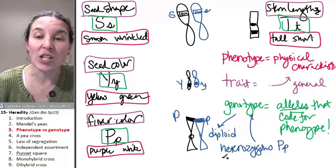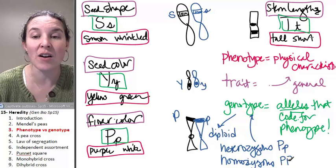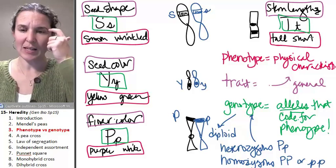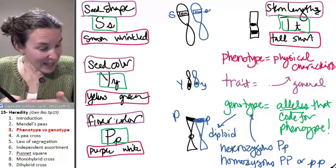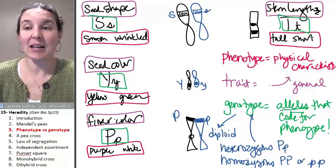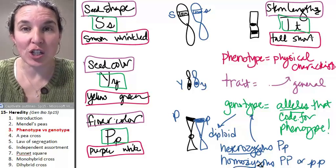A genotype can be homozygous if the alleles are the same. Does that make sense? Now, this leads to our last concept, and that is heterozygous and homozygous describe the genotype.